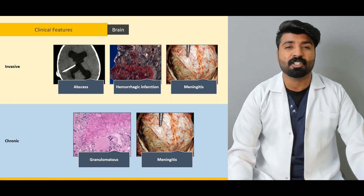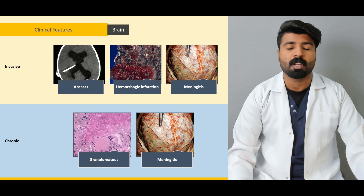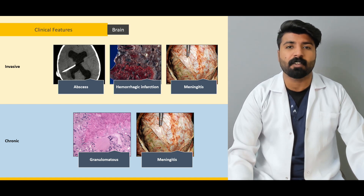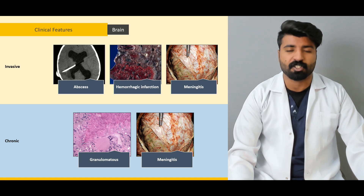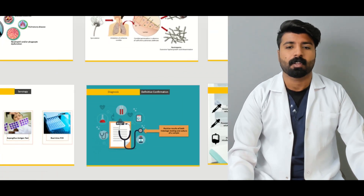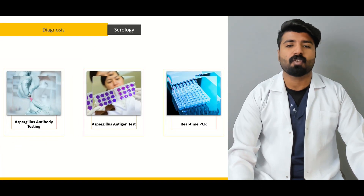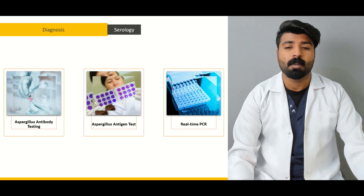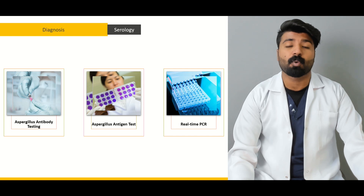We'll also discuss other organ systems: eye manifestations, skin manifestations, pulmonary manifestations, and heart manifestations. After covering all the clinical manifestations, we'll move on to diagnostics — starting with history, then patient examination, then cultures and serologies.